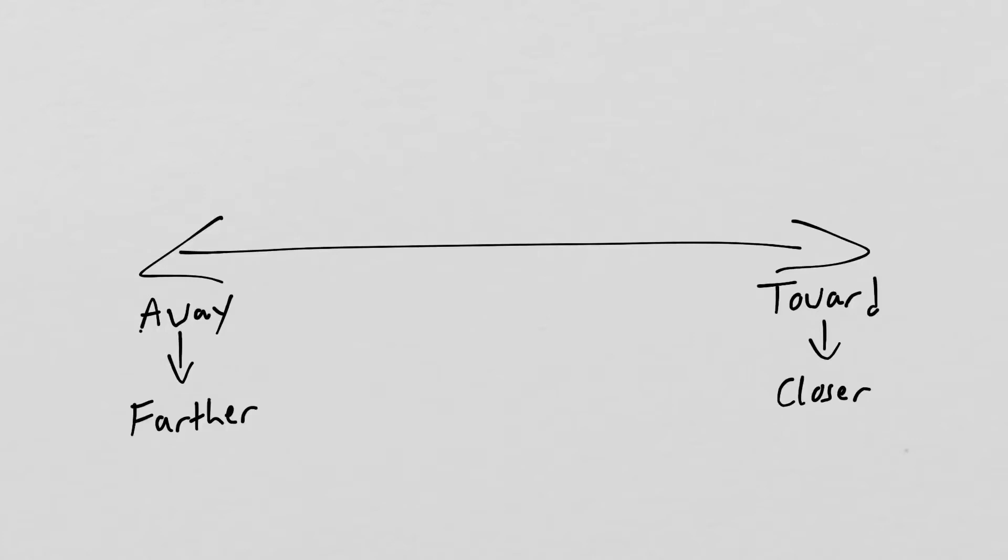Toward and away are often easily understood by children. If the words are fuzzy for them, we might substitute closer and farther.